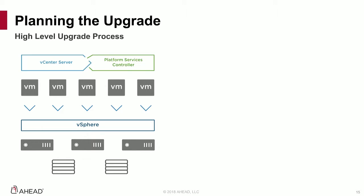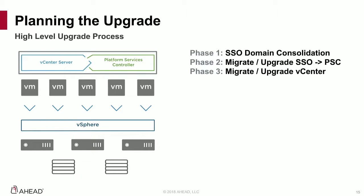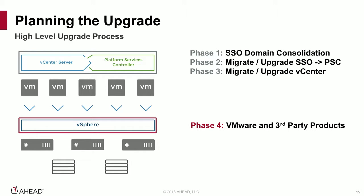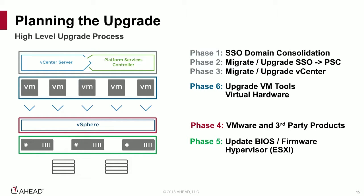When we plan the upgrade, there's a specific order to everything. If you have two separate SSO domains, we want to consolidate those domains if you're using enhanced linked mode. Then we migrate everything from the single sign-on server to a platform services controller, then migrate and upgrade our vCenter servers, then upgrade VMware and third-party products in the correct order prior to getting to ESXi 6.5. After that, we update BIOS and firmware for ESX hosts, upgrade the hypervisor to 6.5, upgrade VM tools and virtual hardware — which is critical for Spectre — and finally upgrade storage.